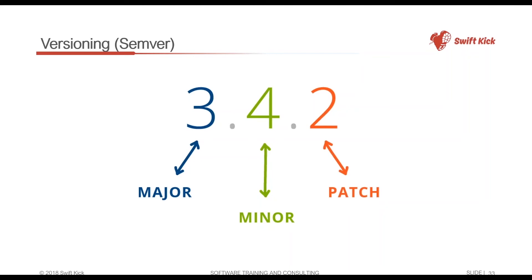If you see a version number with a fourth octet — for example, 3.4.2.1 — that last number is usually held for the build number. The build number indicates you're working on a certain problem but haven't fixed it yet, which is why you don't commonly see it in most package systems.